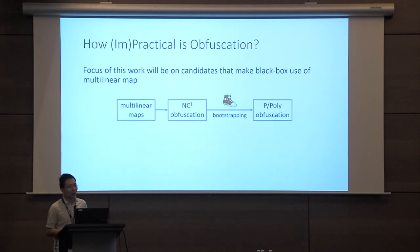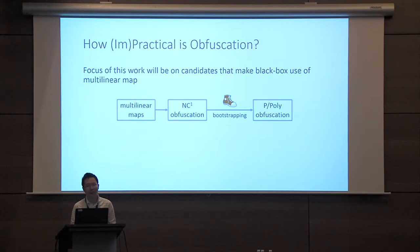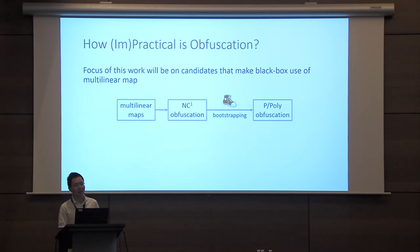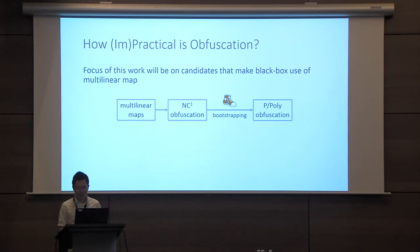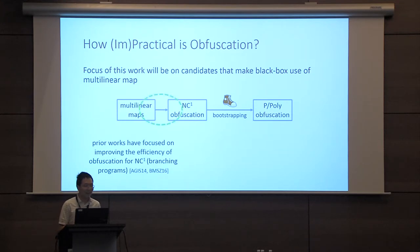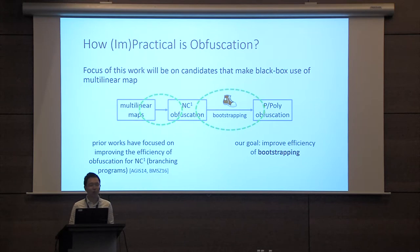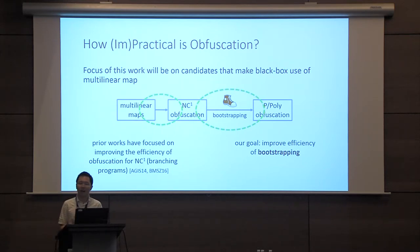The focus of this work will be on constructions that make black-box use of the underlying multilinear map, and we're going to focus on the original construction of obfuscation based on bootstrapping. This is a two-stage pipeline where we start with a multilinear map, build obfuscation for branching programs, and then leverage obfuscation for branching programs to obtain obfuscation for general circuits. Most prior work has focused on improving the efficiency of the first step. In this work, we're going to look at the second stage of the pipeline, and this is where we're going to extract our obfuscation-complete primitive.